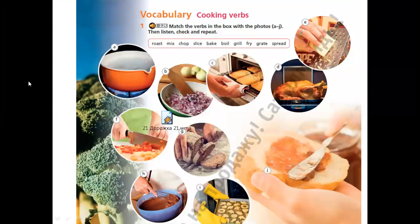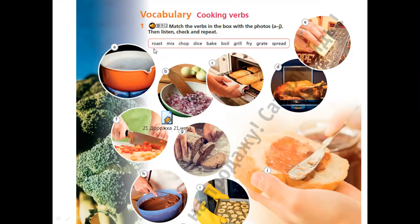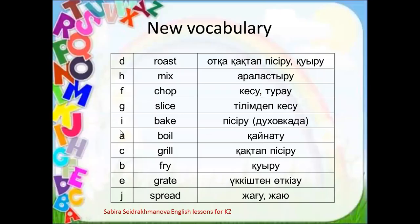We checked our words, so let's repeat them. These are verbs — cooking verbs. Roast, Mix, Chop, Slice, Bake, Boil, Grill, Fry, Grate, Spread. Now let's verify your answers — match the pictures to the corresponding letters and check all the word translations.